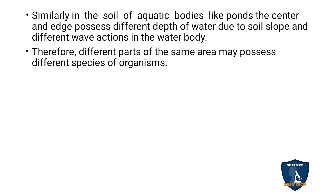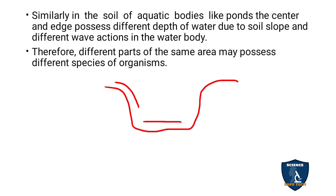Similarly, in aquatic bodies like ponds, the center and the edge possess different depths of water due to soil slope and different wave action of the water body. Because of the depth and the soil slope, you can see various actions and different wave patterns in the pond. Therefore, different parts of the same area may possess different species of organisms.